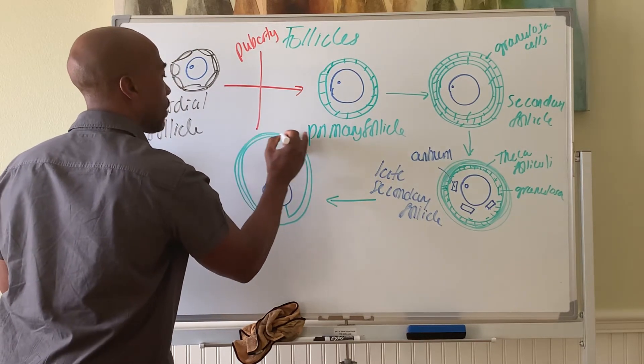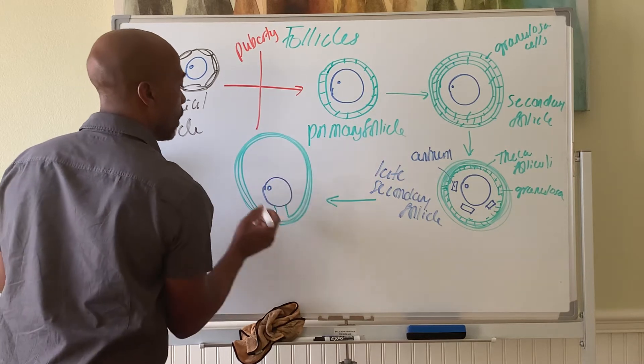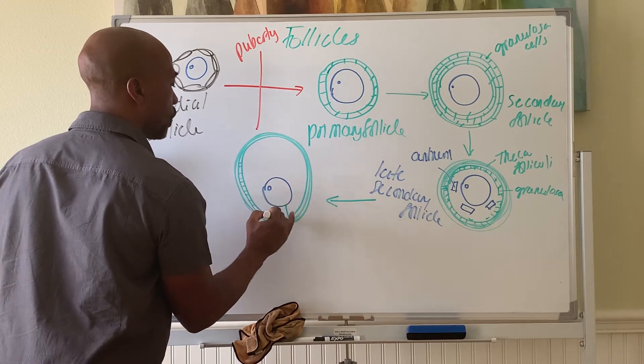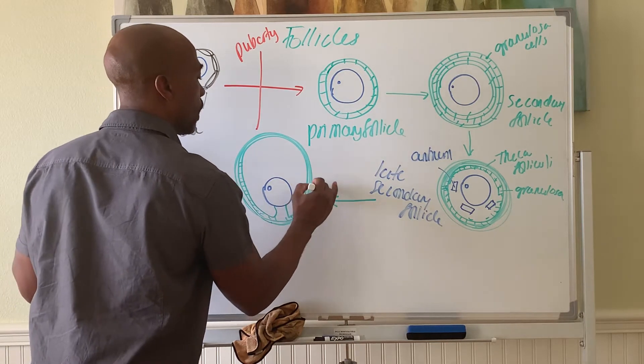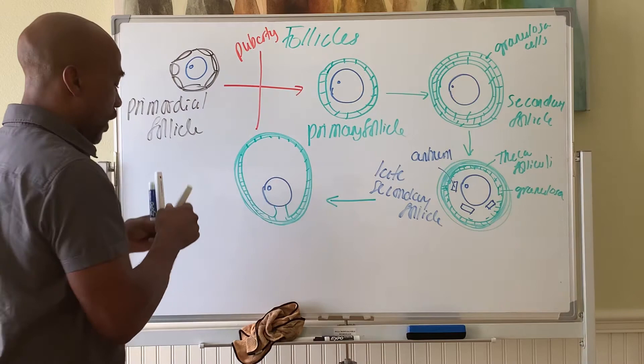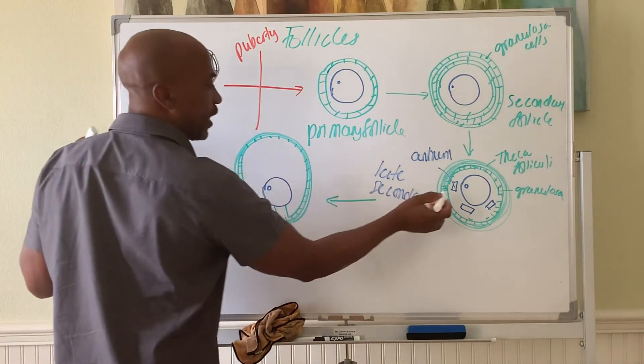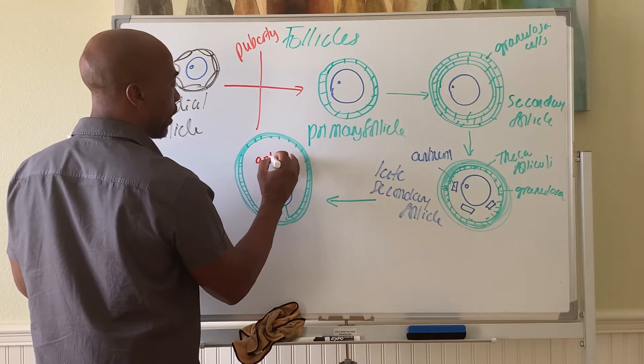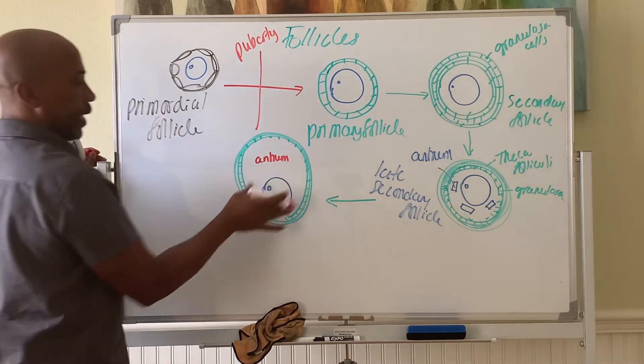Granulosa cells still on the inside. But now you have a bigger space inside. So now, before you had these smaller antrums, now they all merge to form one big antrum here.